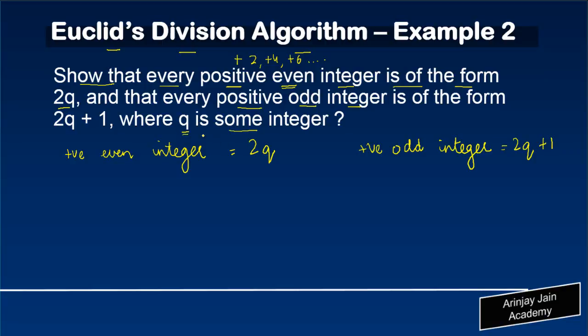Now, if you recall, by Euclid's division lemma, what we learned was that a = bq + r.